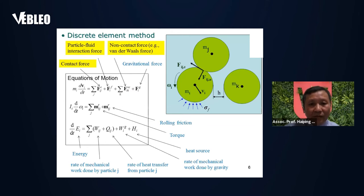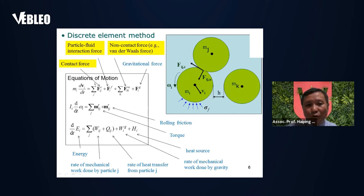For the discrete element method — this is the discrete approach — the method is based on Newton's law of motion. We consider individual particles, and the equations of motion relate to translational motion and rotational motion; we consider energy as well. For translational motion, we need to consider the contact force between particles. If there is fluid, we need to consider the particle-fluid interaction force. For some conditions, we need to consider non-contact forces as well.